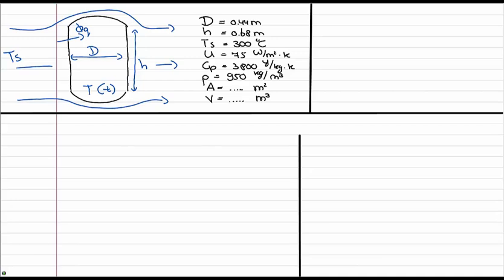Then we have a certain diameter, 0.44 meters and certain height, temperature of steam, overall heat transfer coefficient, Cp, a density, and we do not know the area of our vessel and the volume. So we are going to calculate this. And this was your first exercise.